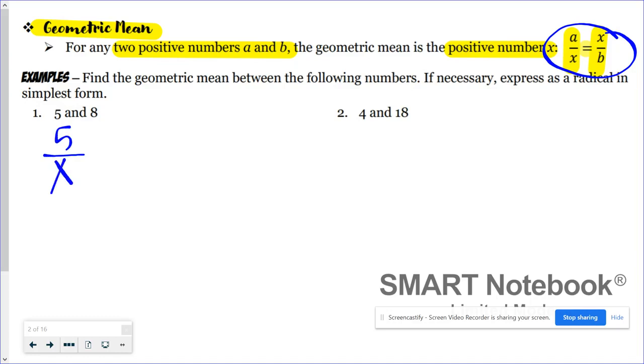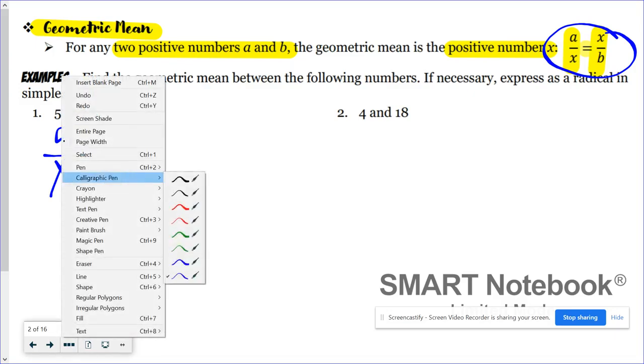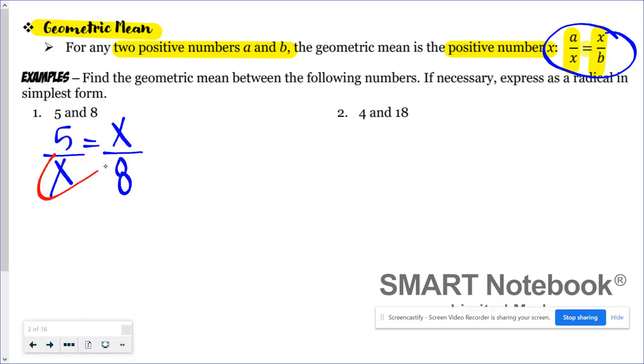Then I cross multiply. So I would multiply x times x and get x squared, and then I would multiply 5 times 8, which is 40.